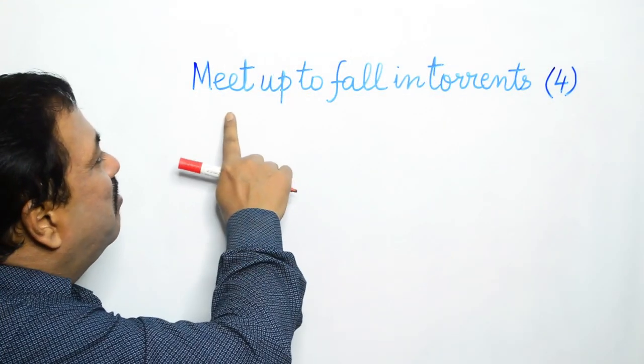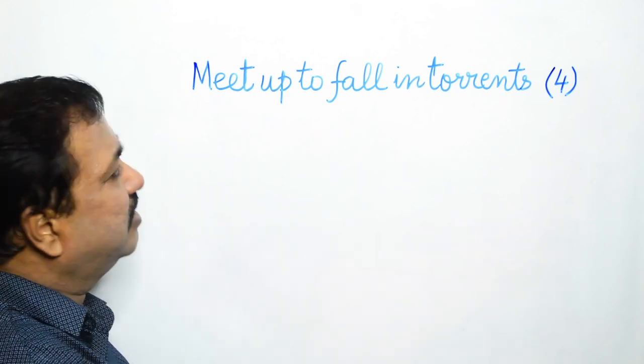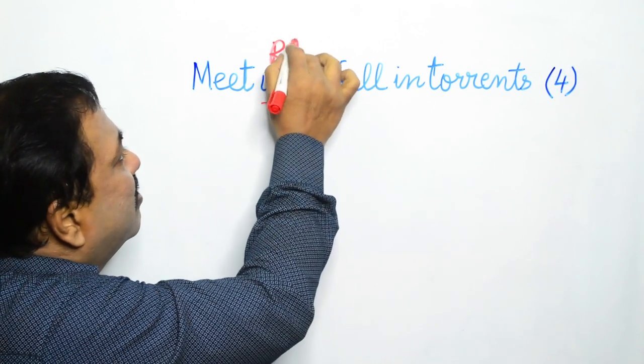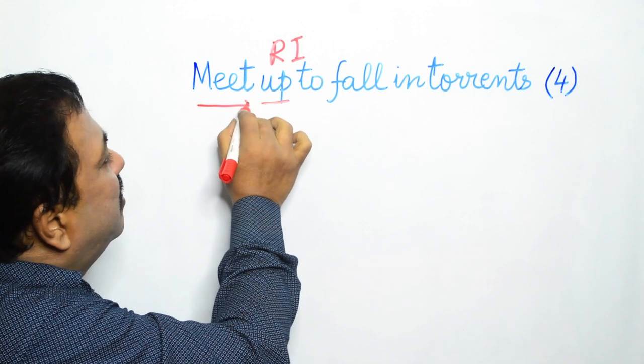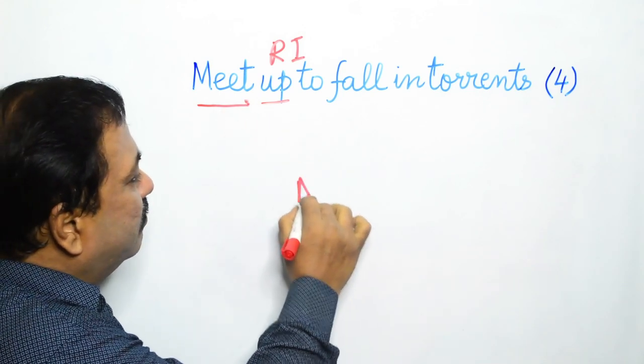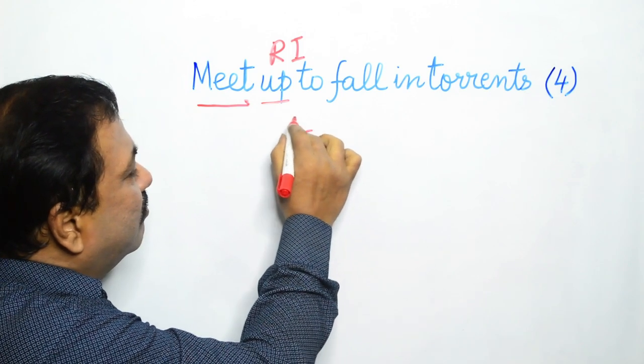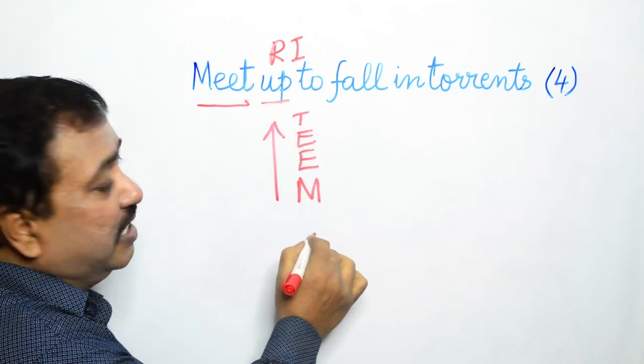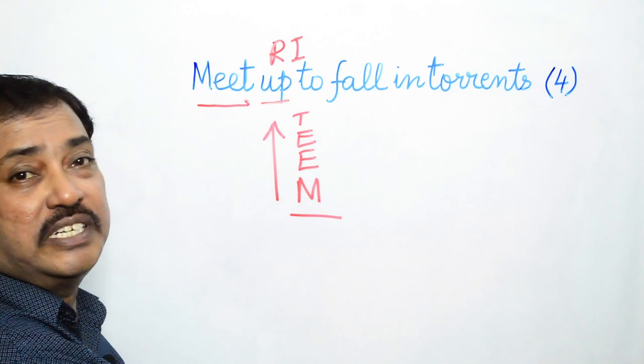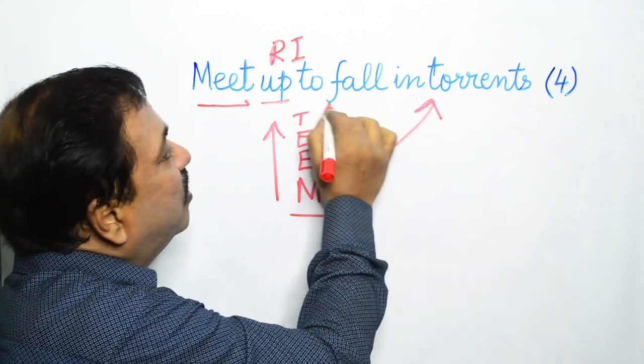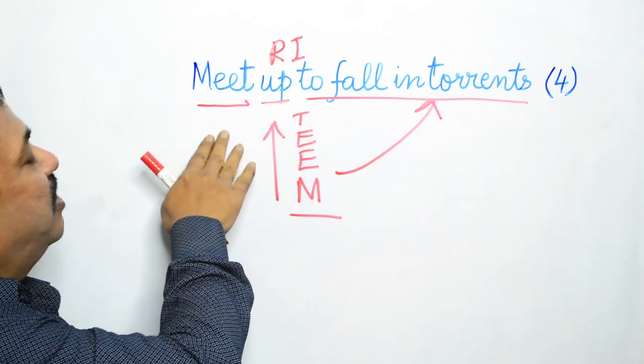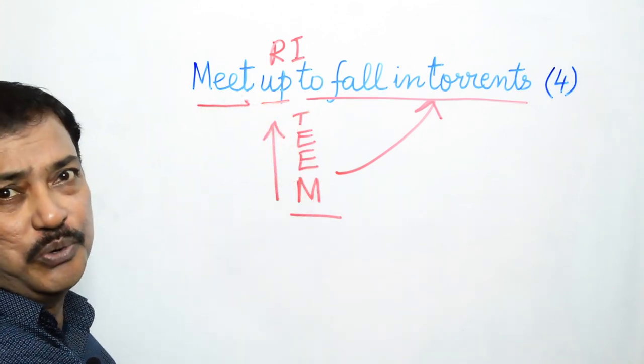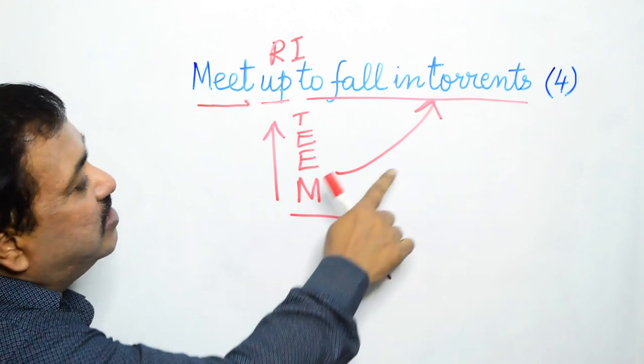Our next clue: Meet up to fall in torrents. Now up is the reversal indicator, and we have to reverse meet. Meet will go up, and what is teem? We get the word teem. Teem means to fall in torrents. Now you can see that because of the word up, we can have this clue as a down clue only. So answer here is teem.